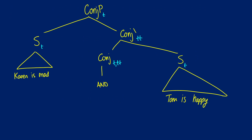Let's see how we can do this with 'Karen is mad and Tom is happy.' The first thing is to lay out the lambda translations for the two sentences. 'Karen is mad' is true if and only if K is mad, and 'Tom is happy' is true if and only if T is happy. For 'and,' we're taking a truth value — combining one sentence with another and getting a sentence back — so it's a T to T to T.